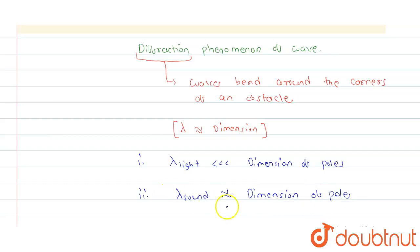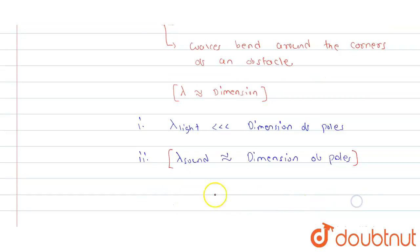So, as the sound wave wavelength is comparable to the dimension of the pole, in case of sound waves, diffraction occurs, which is not in the case of light. In case of light, diffraction does not occur.